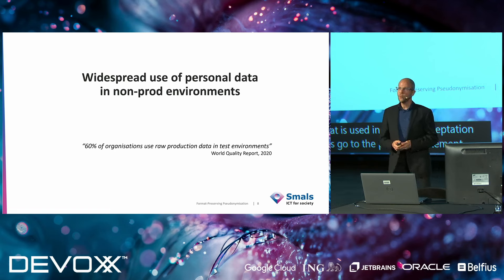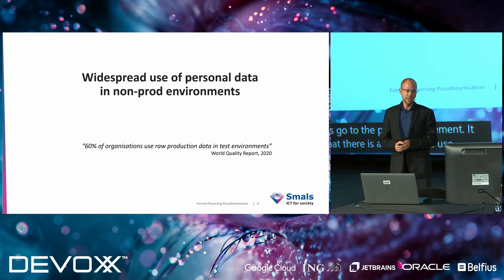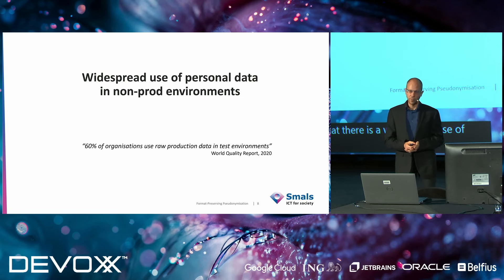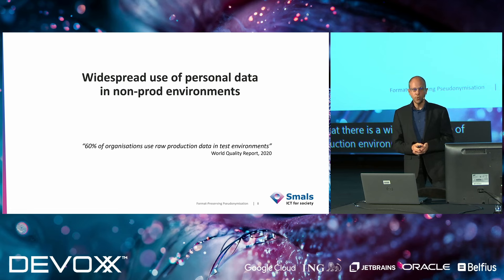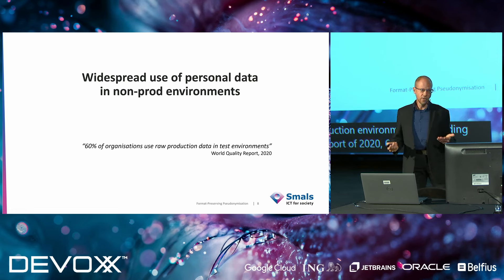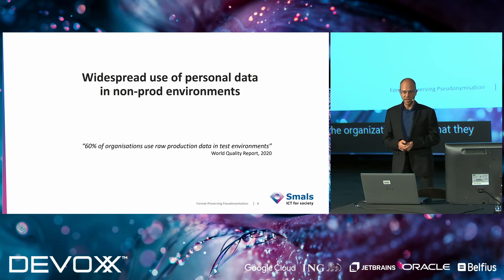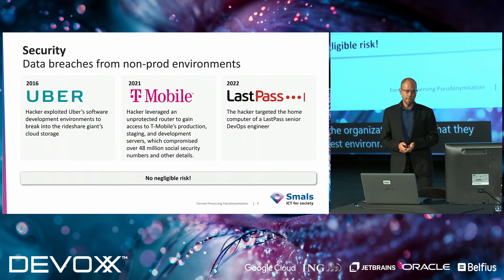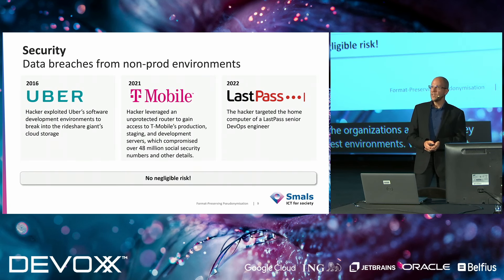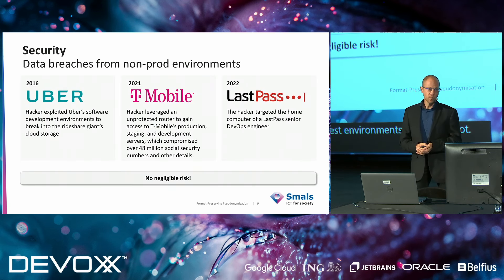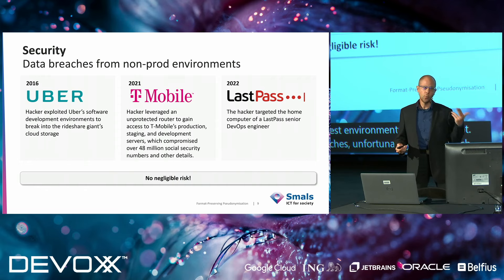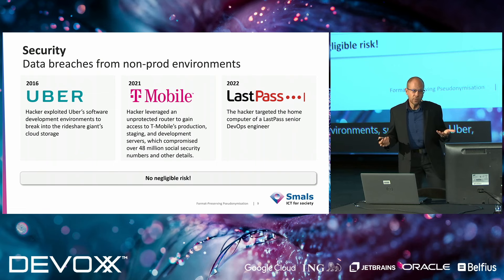It is unfortunately a fact that there is a widespread use of personal data in non-production environments. According to the World Quality Report of 2020, 60% of organizations admit that they use production data in test environments, which is a lot. This results in data breaches — data breaches from non-production environments, such as those at Uber, T-Mobile, and LastPass. The risk is non-negligible.